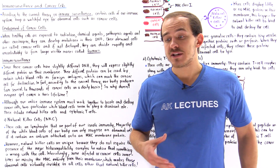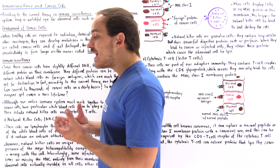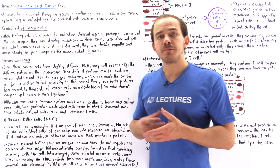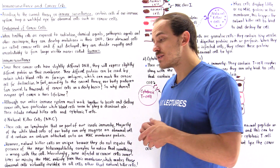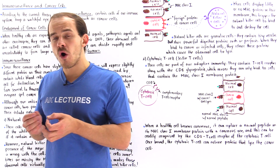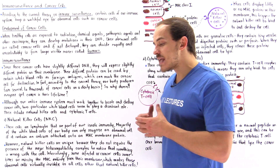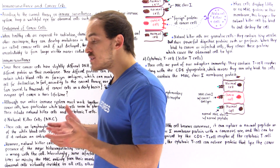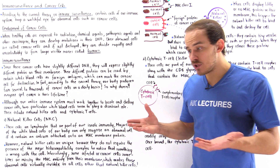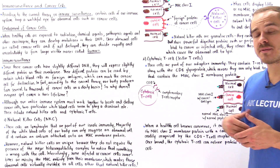Immune surveillance is the idea that certain white blood cells of our immune system are continually and constantly keeping a watchful eye for any abnormal cells that might develop in our body. These abnormal cells might develop as a result of some type of pathogenic infection or as a result of some type of carcinogen. So when healthy cells are exposed to carcinogens such as chemical agents, pathogenic agents, or radiation — for example UV or X-ray radiation — the healthy cells can essentially become cancer cells.